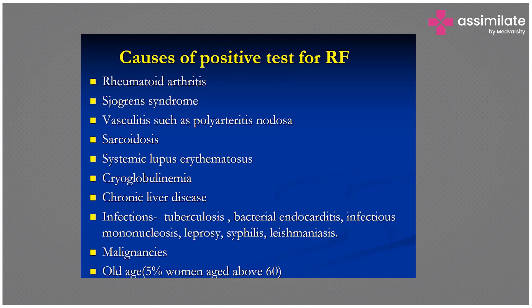Other causes of a positive rheumatoid factor include: rheumatoid arthritis, Sjögren's syndrome, vasculitis, sarcoidosis, cryoglobulinemia, and chronic liver diseases. You should know that other conditions can also cause RF positivity — this is important from an exam point of view.